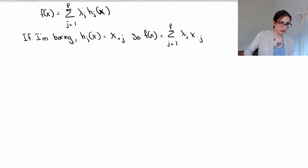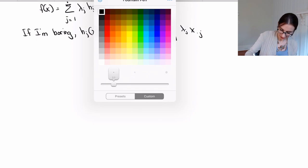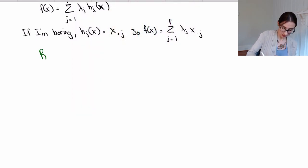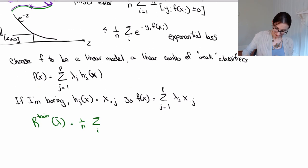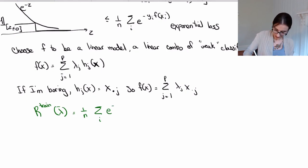And now I'm going to write the training error here. I'm going to do it in a different color for fun. So r train of lambda equals, lambda is a vector here, one over n, sum over i. And then here it is, e to the negative yi f of xi. So I'll just write that down. e to the negative yi, and then f of xi now is the sum over lambda j. Sorry, sum over j, lambda j, hj of xi.